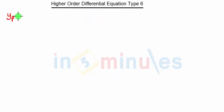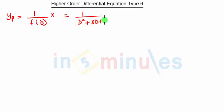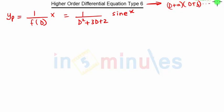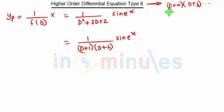Now we calculate yp. The general formula is yp = 1/f(D) · X. In our case f(D) = D² + 3D + 2 and X = sin(eˣ). This is not matching Type 1, 2, 3, 4, or 5, so it is Type 6. In Type 6, always represent the denominator in terms of linear factors like (D+a)(D+b). Since we already factorized it, this becomes 1/[(D+1)(D+2)] · sin(eˣ). We do not want D² terms; represent everything as linear factors.